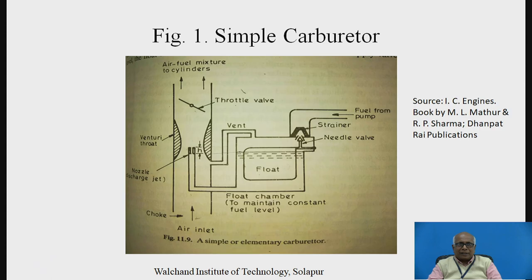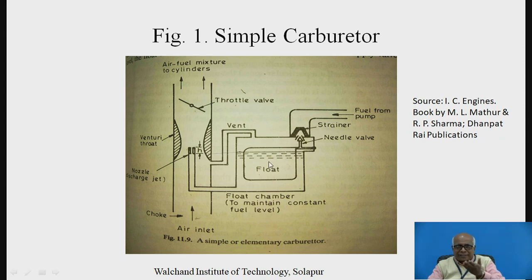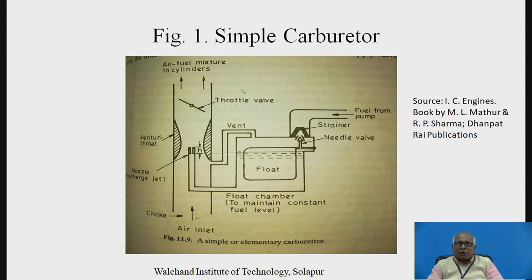If you see this float, which floats in the fuel, a needle valve is attached. As the level drops, the float and subsequently the needle valve move downwards, and it will allow more fuel to enter inside by opening more of this particular port. If the level increases, then the float will move upwards, and the needle valve will close more area, and a lesser amount of fuel will be admitted inside. Thus, depending upon the level, it will control the quantity of fuel coming inside, and accordingly a nearly constant level will be maintained with this mechanism.